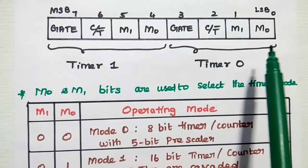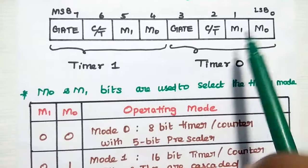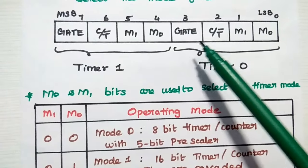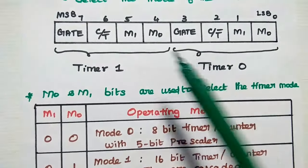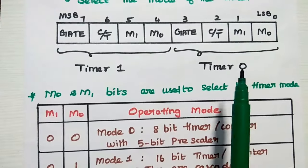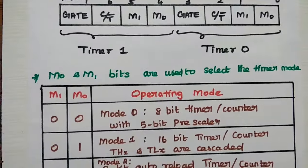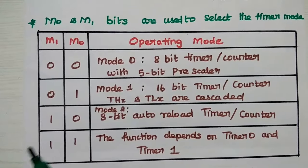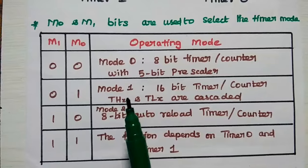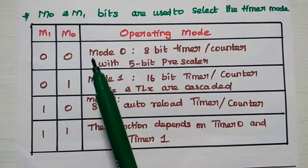This is the bit structure of the TMOD register. It is an 8-bit register. Starting from the least significant bit, the bits are: M0, M1, C/T̄, Gate — and the same four bits are repeated for the upper nibble. The first four bits are defined for Timer 0 and the next four bits are defined for Timer 1. The M0 and M1 bits are used to select the timer mode, and the combination of M1 and M0 defines the operating mode of the timer circuit.